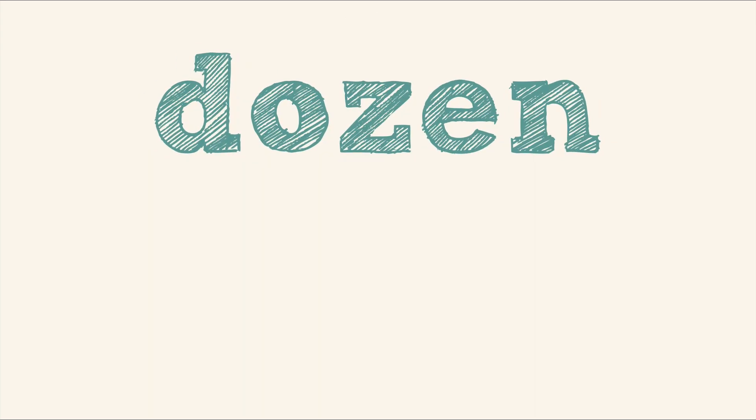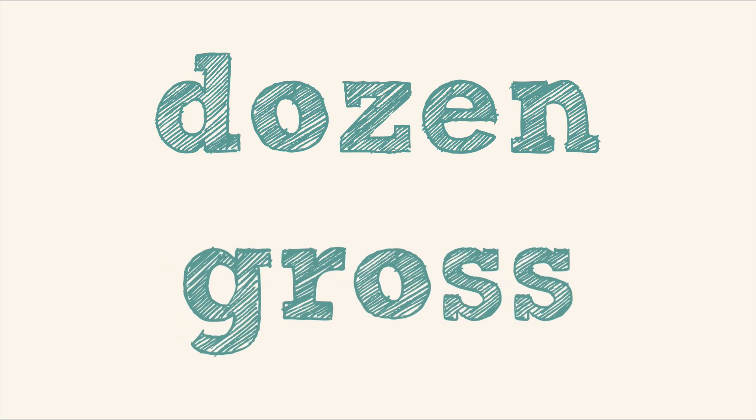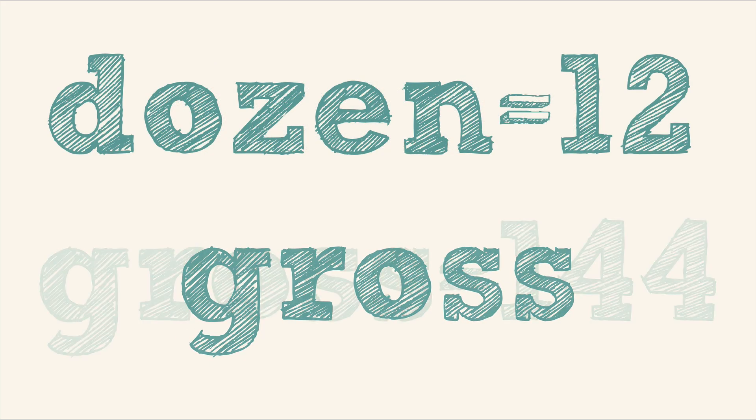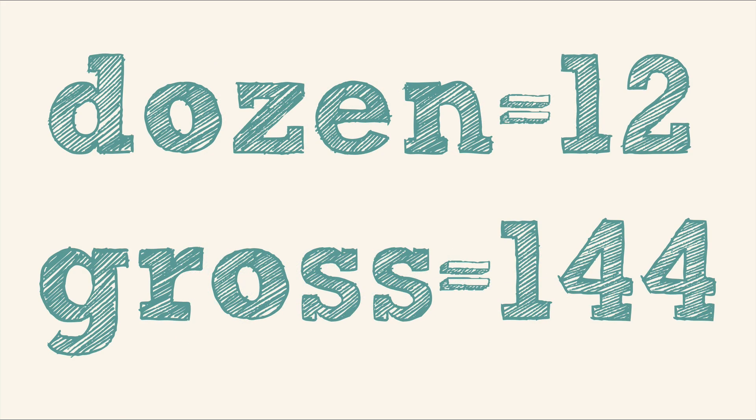We have certain words that represent a counted number, like a dozen or gross. You learn that a dozen means 12, and a gross means 144. So when someone asks for a dozen donuts or a dozen roses, you think, oh, they want 12. Or if you order a gross of pencils, you know you'll get 144.